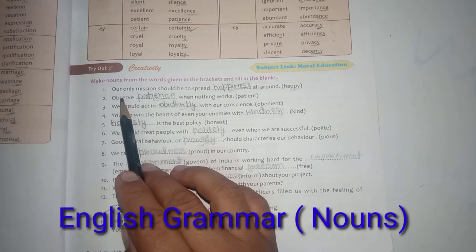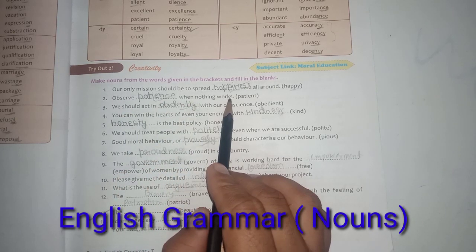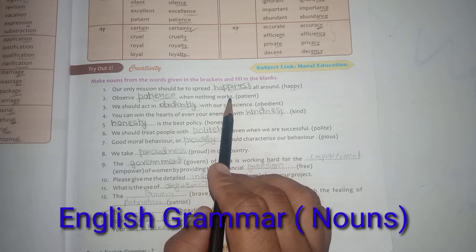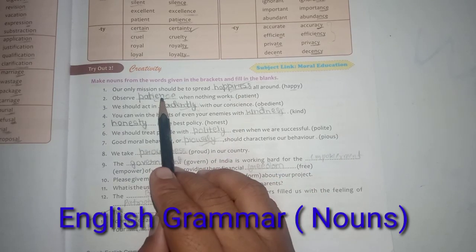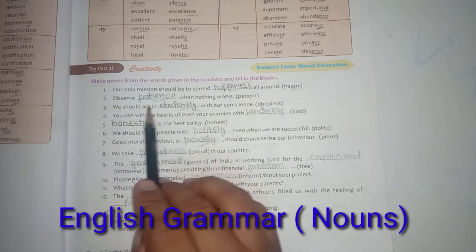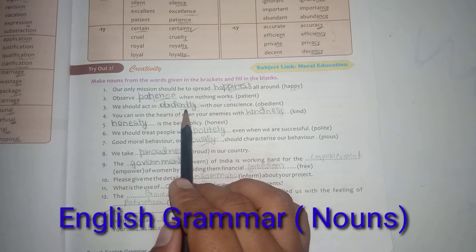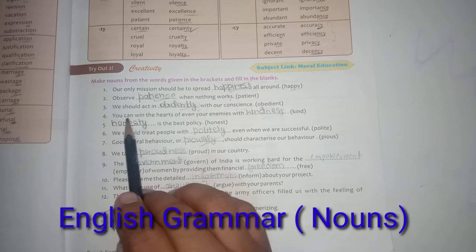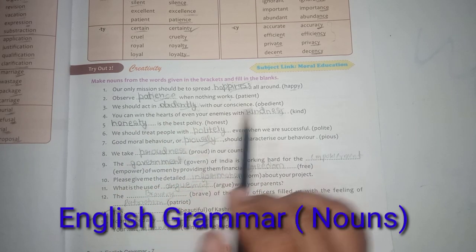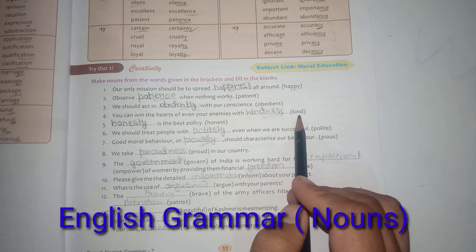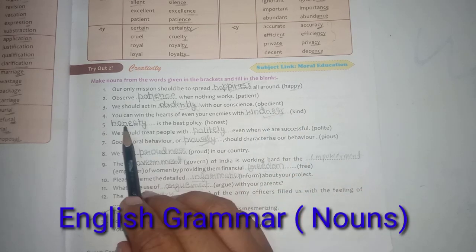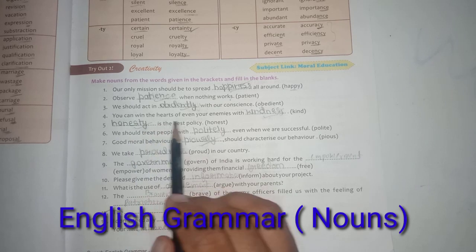'Observe ___ when nothing works' (patient) → patience. When you are doing a lot of hard work but not getting results, you should have patience. 'We should act ___ in our conscience' (obedient) → obediently. 'You can win the hearts of even your enemies with your ___' (kind) → kindness. '___ is the best policy' (honest) → honesty.